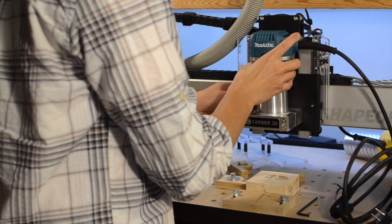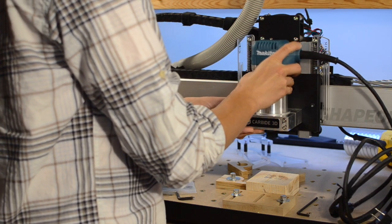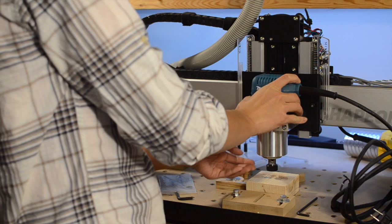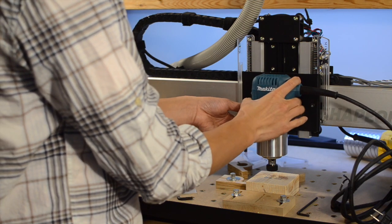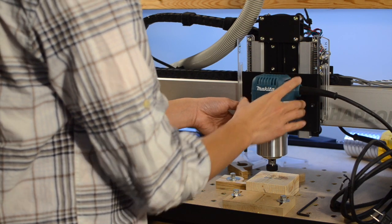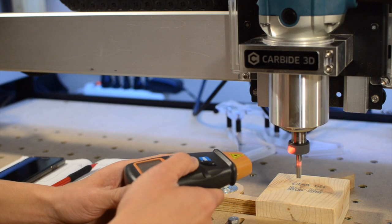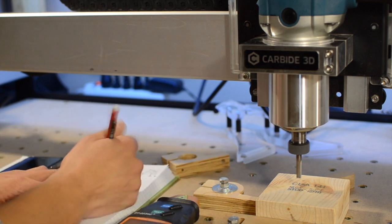The one thing that really distinguishes the Makita is its broader RPM range. It'll throttle down to as low as 10,000 RPM or as high as 30,000 RPM. In theory at least. Actual load-free testing using a super cheap optical tachometer from Amazon showed that these claims were justified.